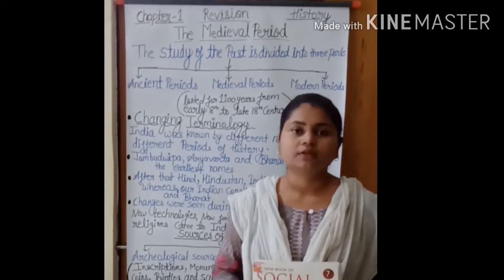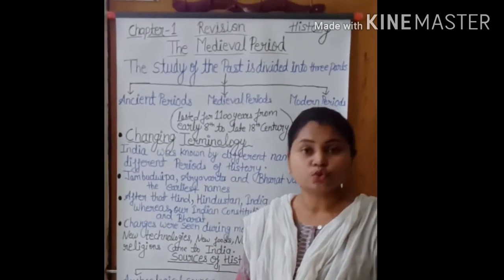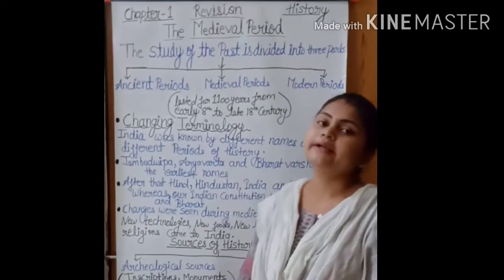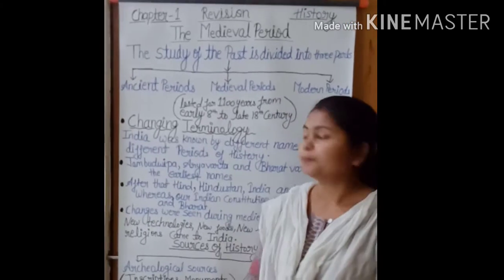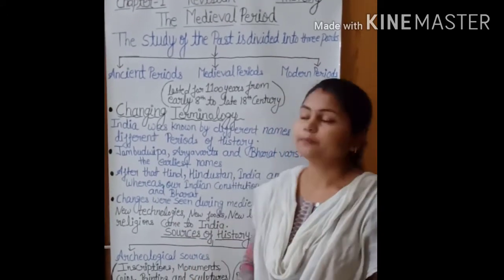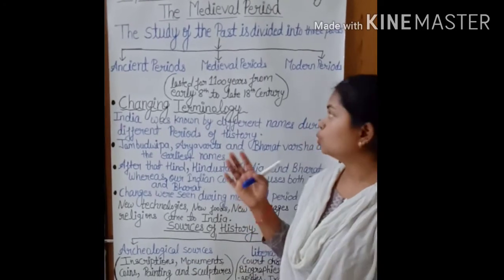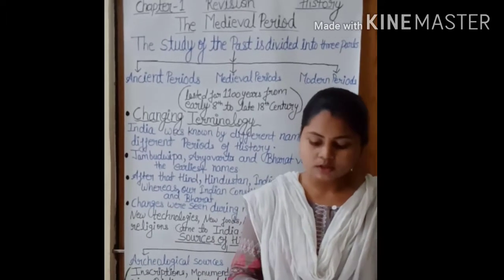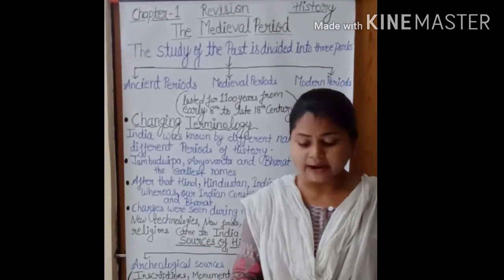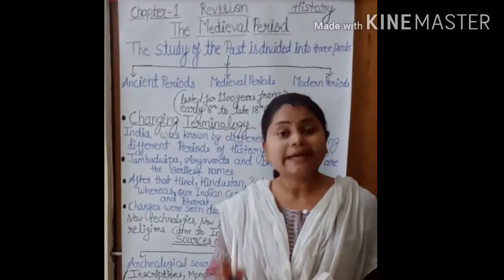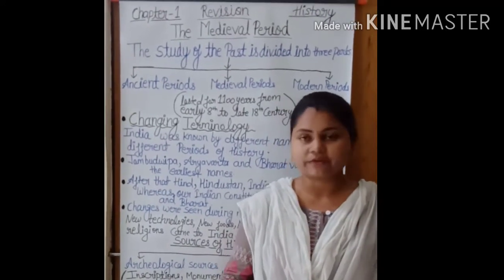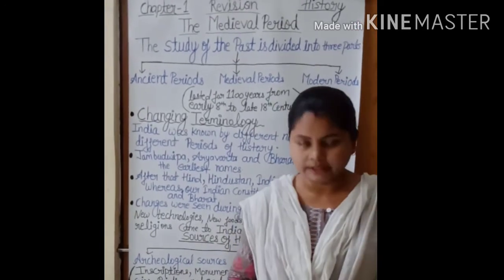The medieval period is divided into two parts: the early medieval period and the late medieval period. The early medieval period covers the 8th to 13th century, and the late medieval period covers the 13th to 18th century. The rulers of the early medieval period were Rajputs, Palas, Gurjar Pratiharas, Cholas, and so on. The rulers of the late medieval period were Afghans, Turks, and Mughals. By the end of the 15th century, European traders started trade with India.